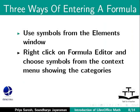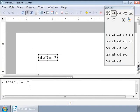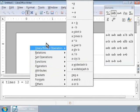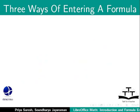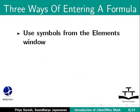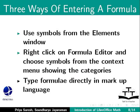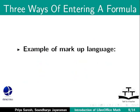We can also write a formula by right clicking on the Formula Editor window and selecting Symbols. The context menu displays the same categories of symbols as in the Elements window. Choosing any category displays the available symbols in that category. There is a third way of writing a formula — we can directly write the formula in the Formula Editor window using a special markup language that the Math application can understand. We already saw one simple example: 4 times 3 equals 12. Notice the word 'times' here. Similarly, to write 4 divided by 4 equals 1, the markup is '4 over 4 equals 1'.